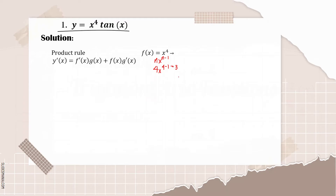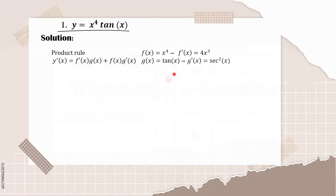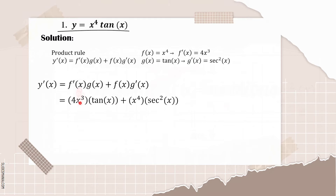Therefore, our derivative of x raised to four is four x cubed. The second is the derivative of g of x, which is tangent of x. Based on our six basic trigonometry derivatives, the derivative of tangent of x is equal to secant squared of x. Now that we have these values, we can simply substitute into our equation: f prime of x equals four x cubed, g of x equals tangent of x, f of x equals x raised to four, and g prime of x equals secant squared of x.